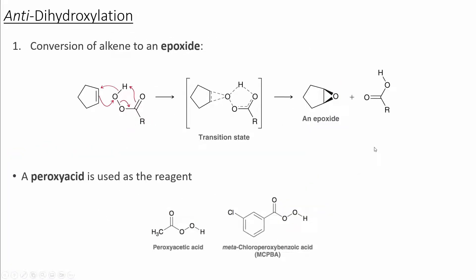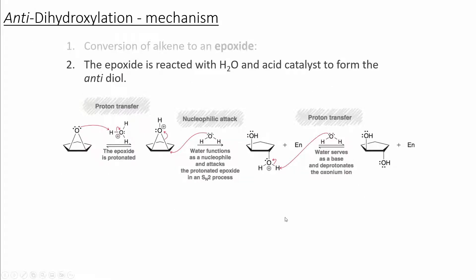The first step involves a peroxide rearranging to form an epoxide. This epoxide can be formed through the most commonly used reagent, meta-chloroperoxybenzoic acid, or MCPBA. Once the epoxide is formed, it can react with water and an acid catalyst to form the anti-diol.